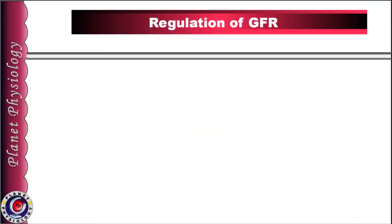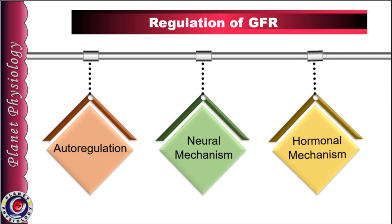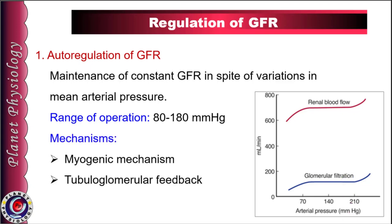GFR is regulated by three mechanisms: autoregulation, neural mechanism, and hormonal mechanism. Autoregulation of GFR is the most important mechanism by which GFR is maintained. It is defined as maintenance of constant GFR in spite of wide variations in mean arterial pressure. Mean pressure may vary between 80 and 180 mmHg but GFR is maintained at its normal value of 125 ml per minute. This is achieved by two processes: myogenic mechanism and tubuloglomerular feedback mechanism.